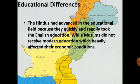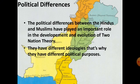Regarding educational differences, when the English language was introduced, Muslims refused to adopt it, which worsened their economic condition. Politically, especially after the 1857 war, Hindus tried to hold Muslims back and prevent them from participating equally in the nation.